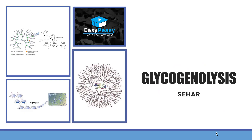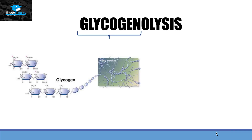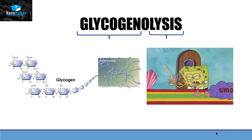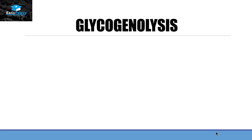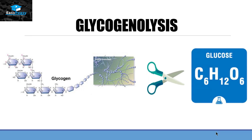Hello friends, this is Sahir from EZPZ and the topic we are going to discuss today is glycogenolysis. If we look at the word, it tells us what it means. Glycogen is a polymer made up of glucose, and lysis means to split it up. So in this process, we are basically going to break down glycogen in order to get glucose from it.